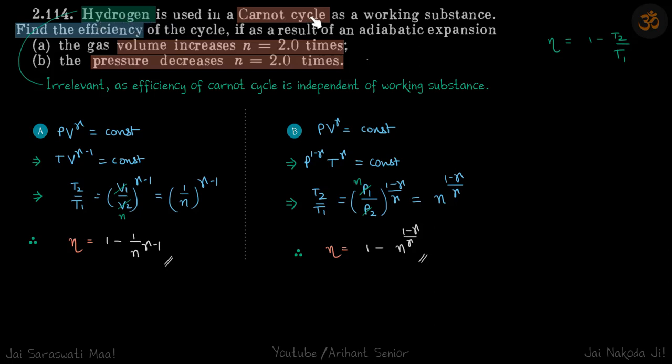Hydrogen is used in a Carnot cycle. We need to find the efficiency of the cycle if in the adiabatic expansion volume increases n = 2.0 times, and second case when pressure decreases n = 2.0 times.